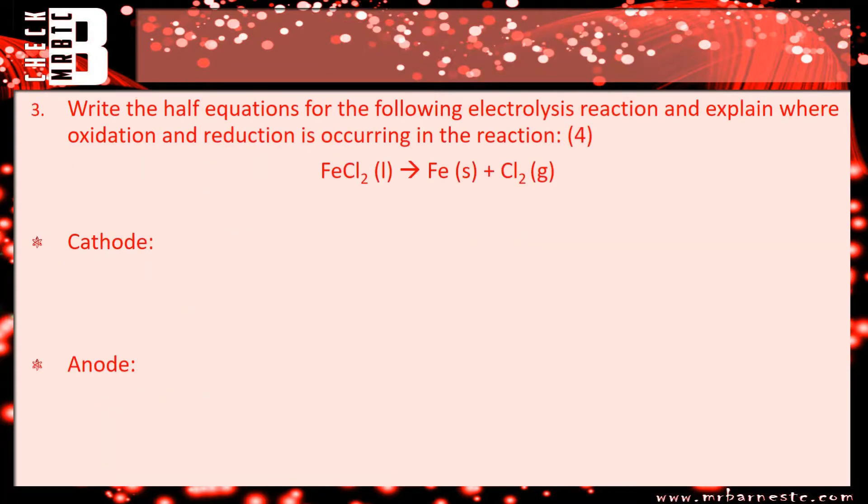On to question three: write the half equation for the following reaction. So if we start off with the cathode, that's your metal, your positive metal. You know you've got two chloride ions, that's Cl-, two of those, therefore iron has got to be Fe2+. So it's Fe2+. How does it go back to iron? Add two electrons on, so it's Fe2+ + 2e- goes to Fe. One mark for that. We've just covered it, you've added two electrons, it's gained, so it's reduction.